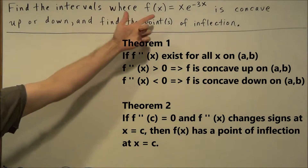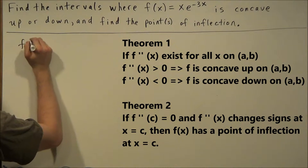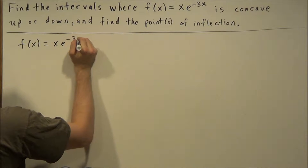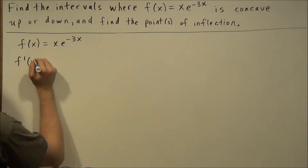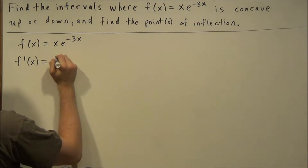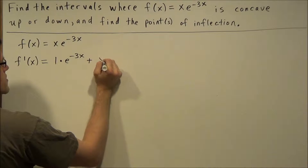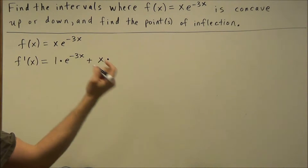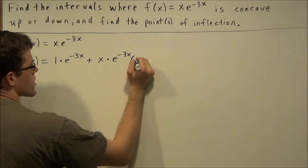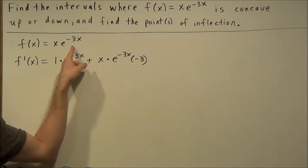To get started we need to find the first and second derivative of f of x. So we start off with f of x equals x times e to the negative 3x. To find the first derivative we're going to use product rule. We have the derivative of x, which is 1, times e to the negative 3x, plus x times the derivative of e to the negative 3x, which is e to the negative 3x times negative 3. We have to use chain rule when we take the derivative of that e to the negative 3x term.